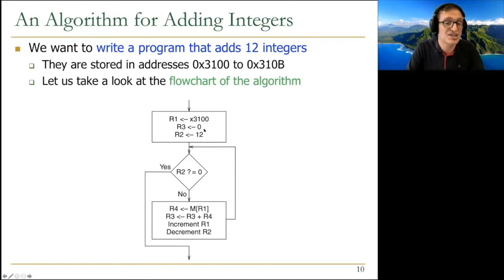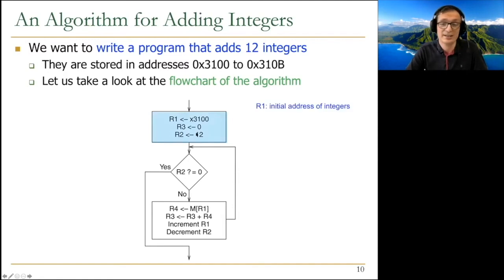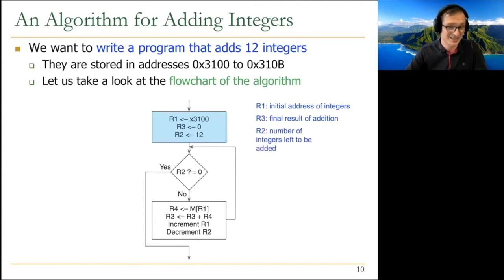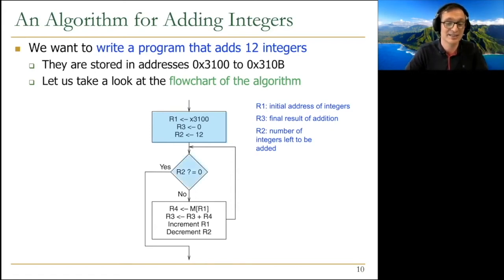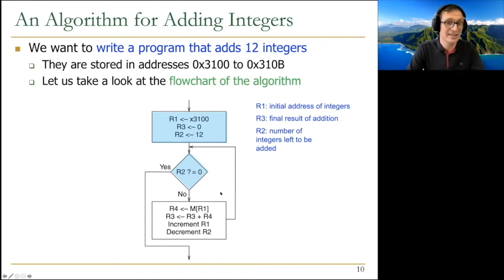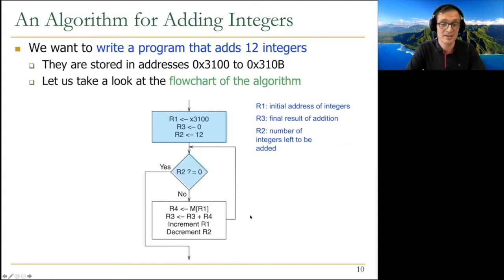We decided the register assignments: the address of the first integer at 3100 goes in R1, the counter goes in R3, and the number of integers in R2. R1 is the initial address of integers, R3 stores the final result of the addition, and R2 is the number of integers left to be added. This is the initialization part — algorithms almost always have initialization. The first step is to test whether R2 equals 0, meaning whether we have integers left. If not, we do the addition; if yes, we exit the loop.